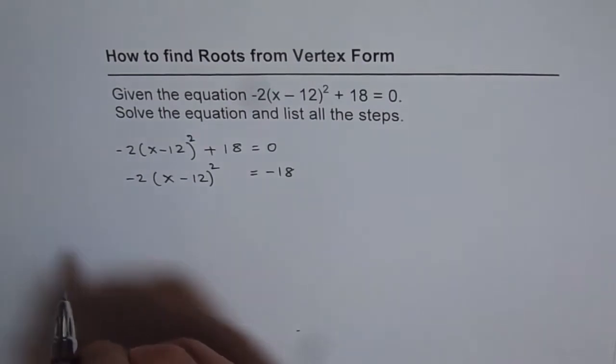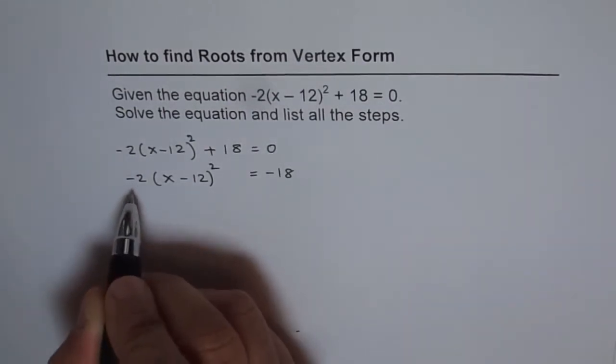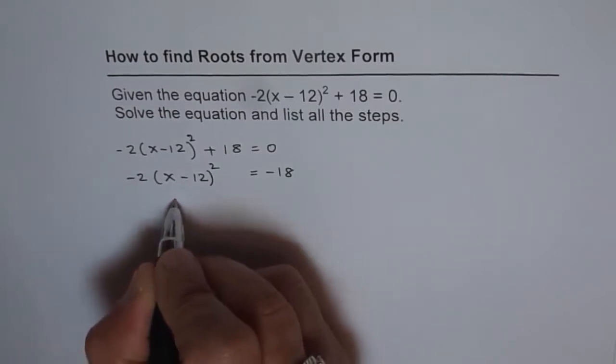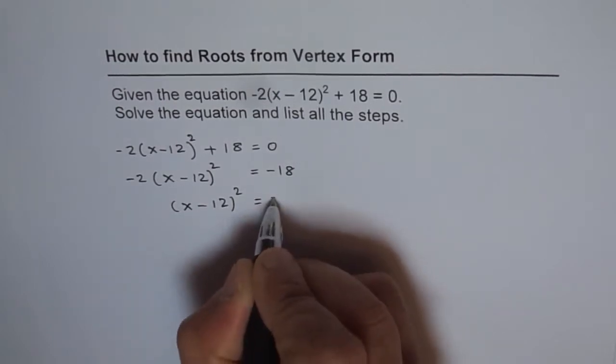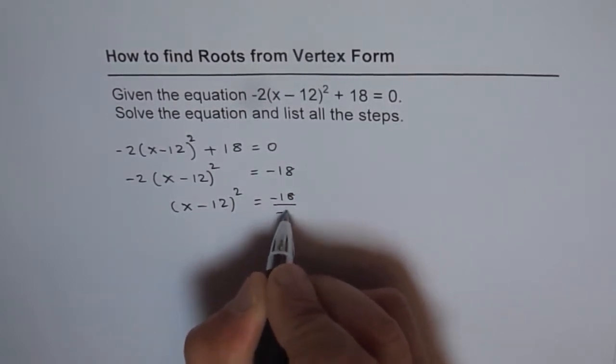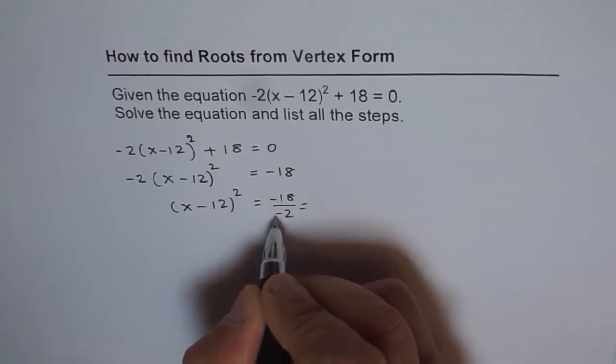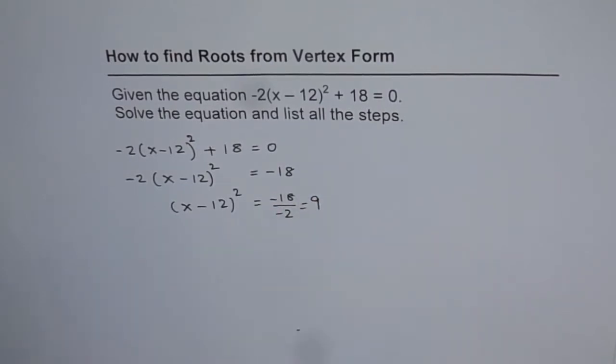The second step is to divide both sides by -2. When we do that, -2 gets cancelled and you are left with (x - 12)² = -18 / -2, which equals 9.